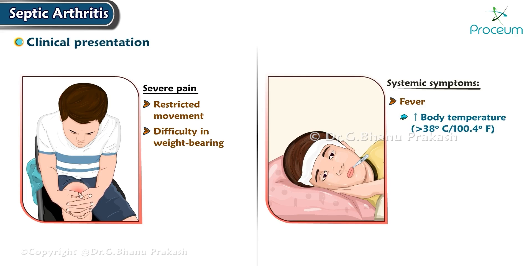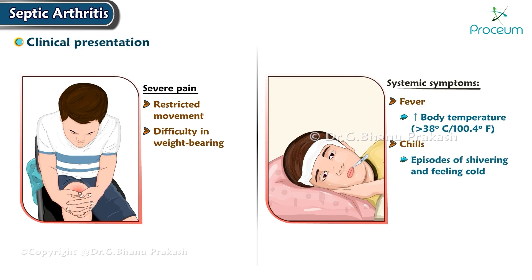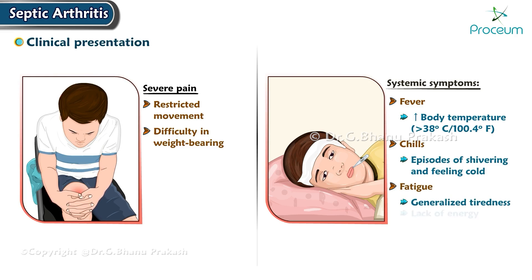Systemic symptoms include fever with elevated body temperature usually above 38°C (100.4°F), chills with episodes of shivering and feeling cold, and fatigue with generalized tiredness and lack of energy.